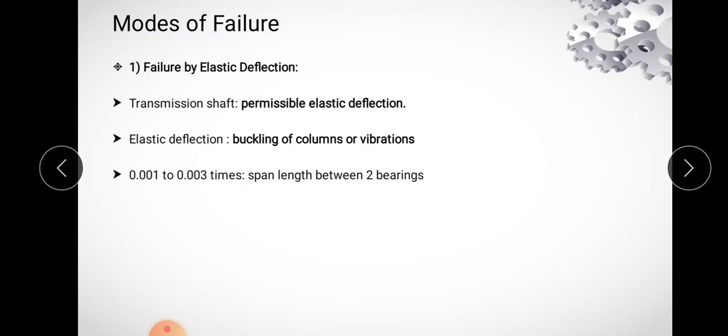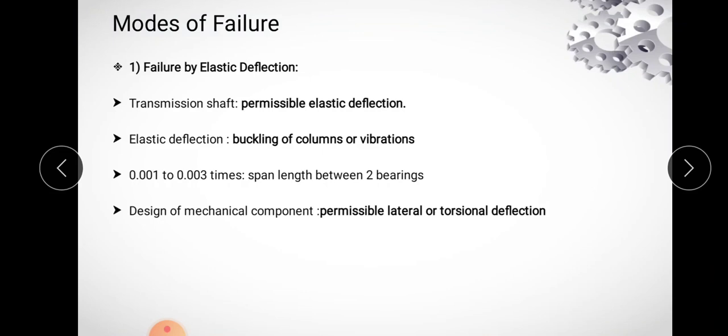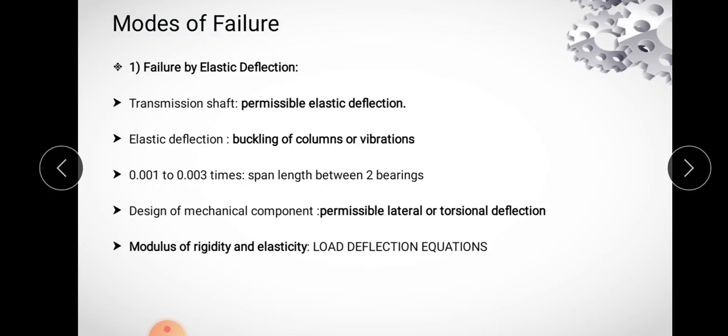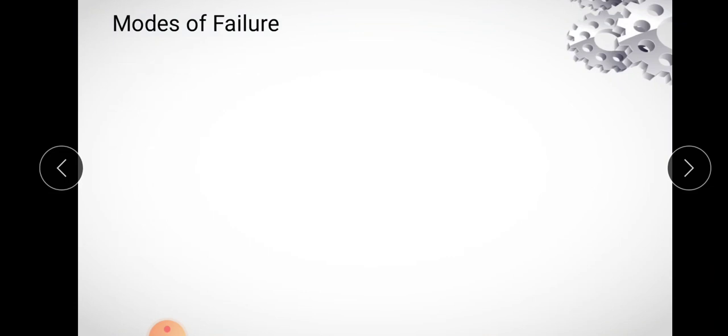Design of the mechanical component is based on permissible lateral or torsional deflection. The stresses induced in the component are not so significant, and properties like yield strain or ultimate tensile strain are not of primary importance in this mode of failure. Rather, the modulus of rigidity and modulus of elasticity are the important properties to consider, and the dimensions of the component are determined by the load-deflection equations.